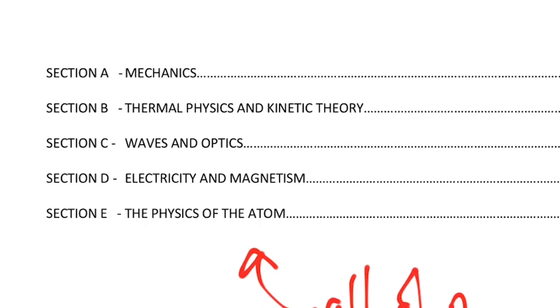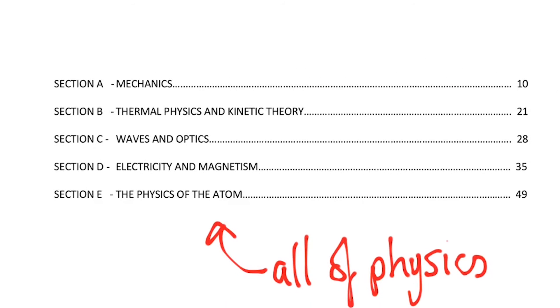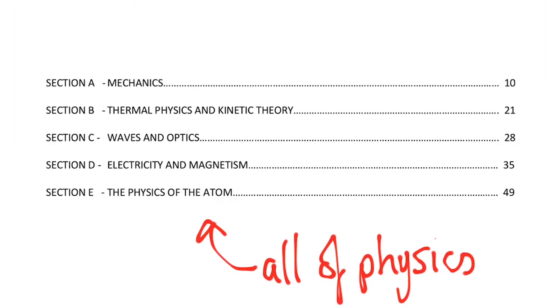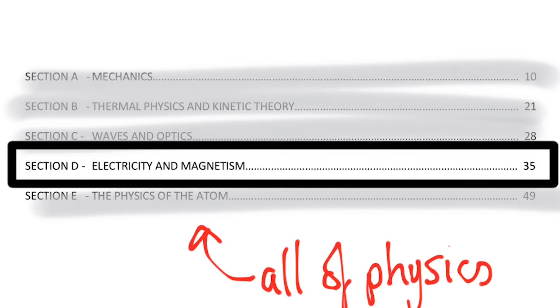So this is the entire of physics here. All of physics is five sections. We want to focus on section D. See section D there? Electricity and magnetism. That's what we are focusing on.